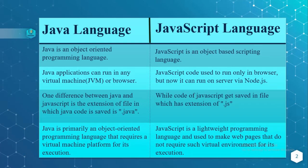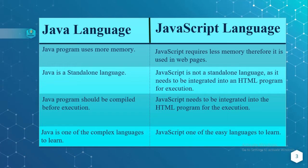Java programs are saved with the file extension .java, while JavaScript code is saved with the .js file extension. Java is primarily an object-oriented programming language that requires a virtual machine platform for its execution, whereas JavaScript is a lightweight programming language used to make web pages that do not require such a virtual environment for execution.